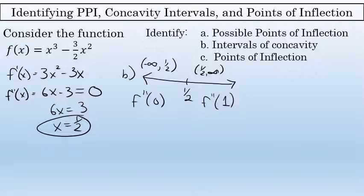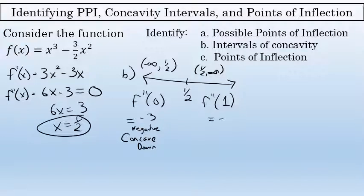When I substitute 0 into the second derivative 6x minus 3, I get negative 3. The important thing is that it is negative, and that tells me every point in that interval the function is concave down. On the other hand, when I substitute 1 in for x, 6 times 1 is 6, and 6 minus 3 is positive 3. The important thing is that it is positive — that tells me every point in that interval is concave up. The function from 1 half to infinity is always concave up.